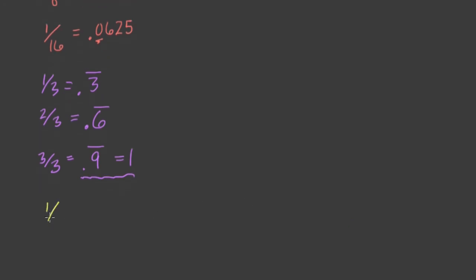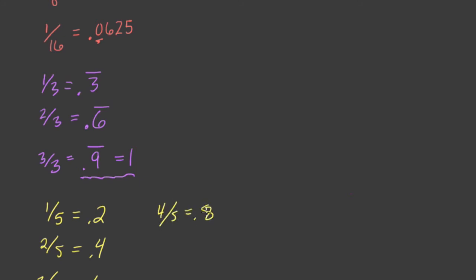Another couple of landmark fractions: 1 fifth is very useful, and that's 20%, or 0.2. So 2 fifths would be 0.4 — we double this. 3 fifths — we triple 0.2 — and we get 0.6. 4 fifths is 0.8, and 5 fifths is 1.